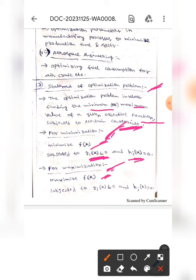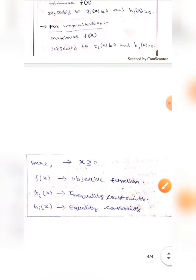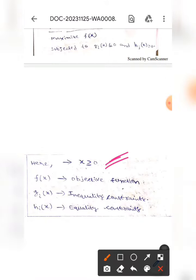For maximization, we write: maximize f of x subject to gi of x less than or equal to zero and hj of x equals zero, where x is greater than or equal to zero, which means it is non-negative.